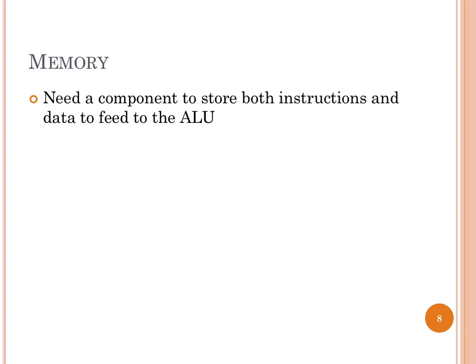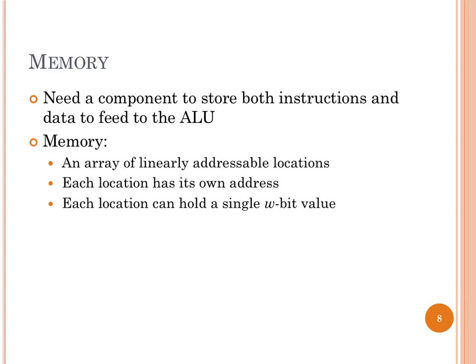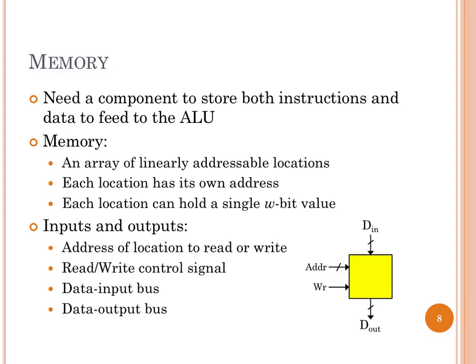Now we need memory so we don't have to type every single instruction as we go — we want the computer to remember instructions and data. Our memory model is like an array: we have an address, which is just an index from the start of memory, and each index stores some w-bit value. We also need to know if we're reading or writing. We have one control input, the write bit (WR): if WR is zero, we're reading and expect a value on D-out; if WR is one, whatever is on D-in gets stored at the specified address.